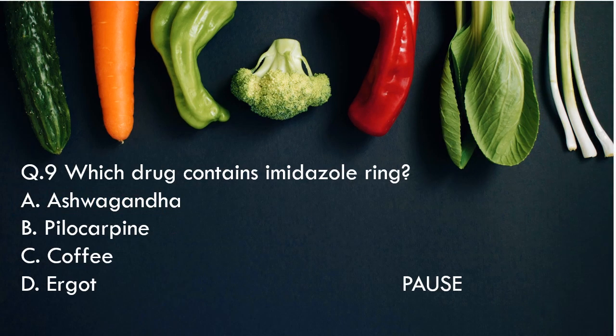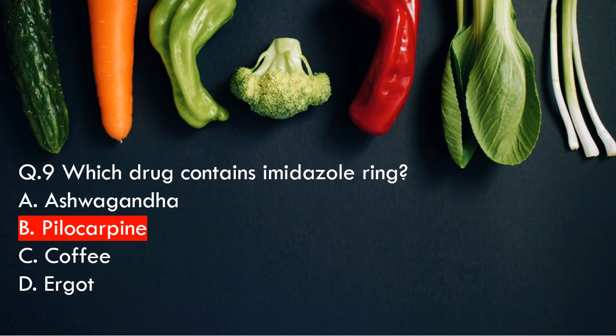Question 9: Which drug contains an Imidazole ring? Option A, Ashwagandha. Option B, Pilocarpine. Option C, Coffee. And option D, Ergot. And the right answer is option B, Pilocarpine. So Pilocarpine contains an Imidazole ring.